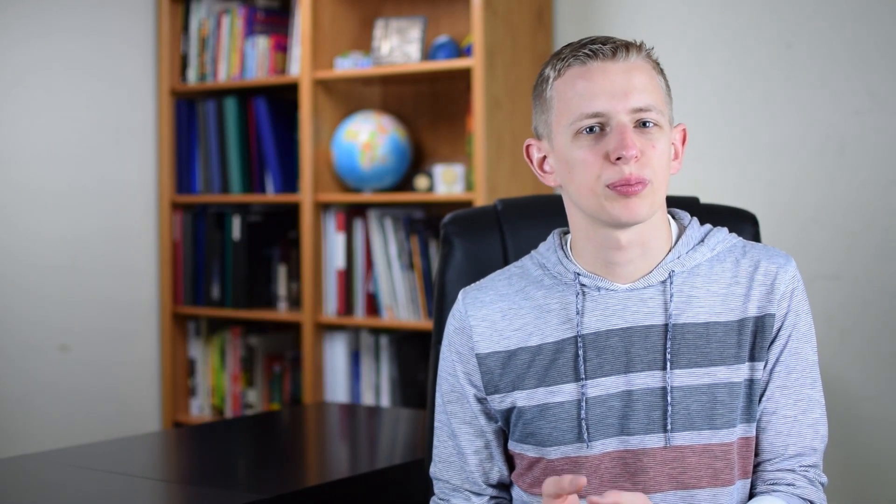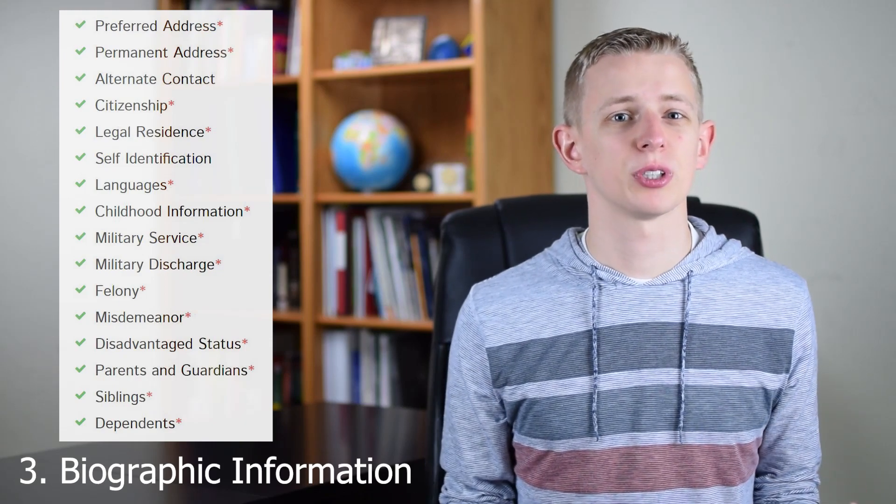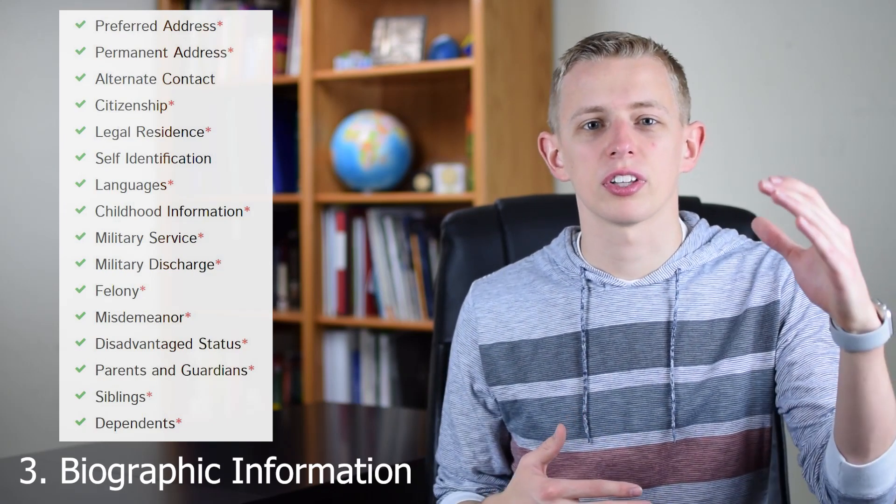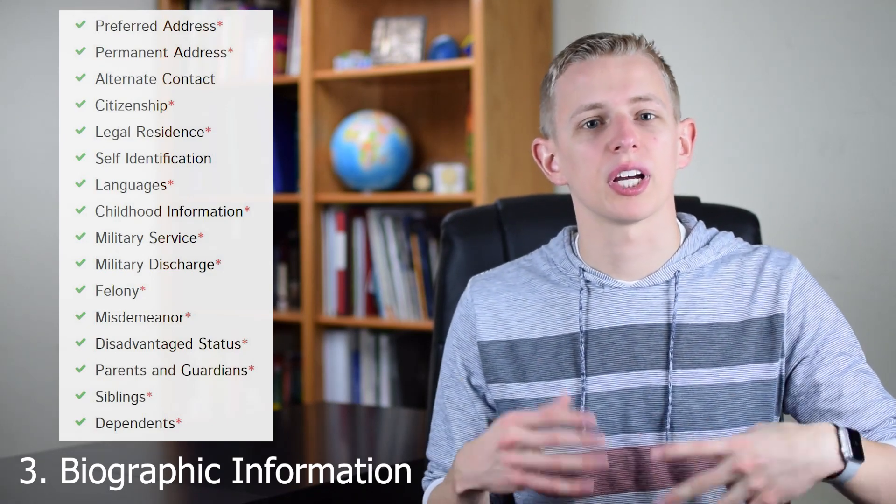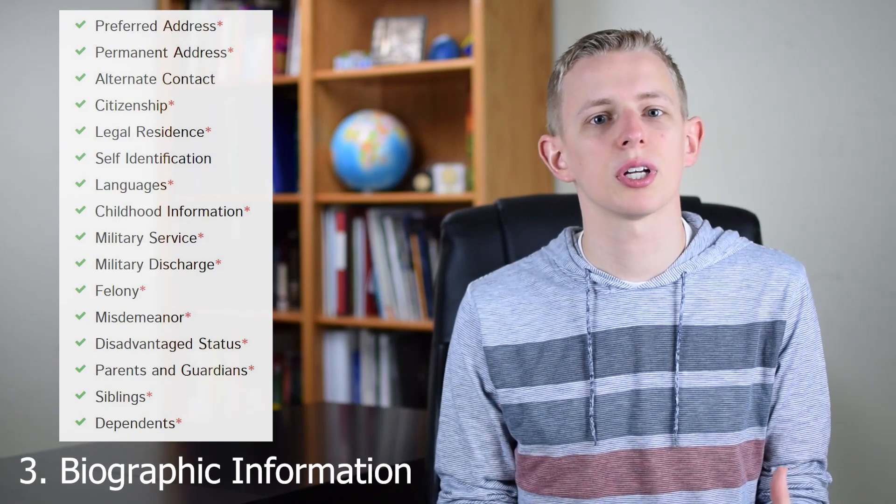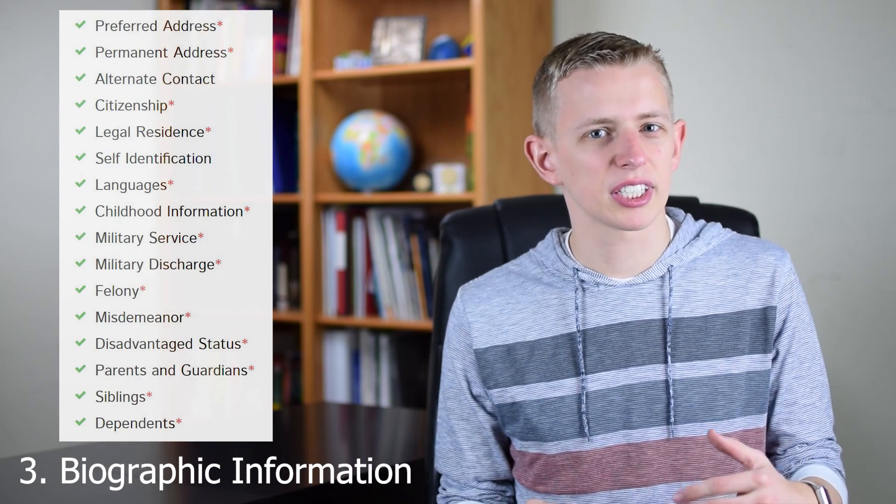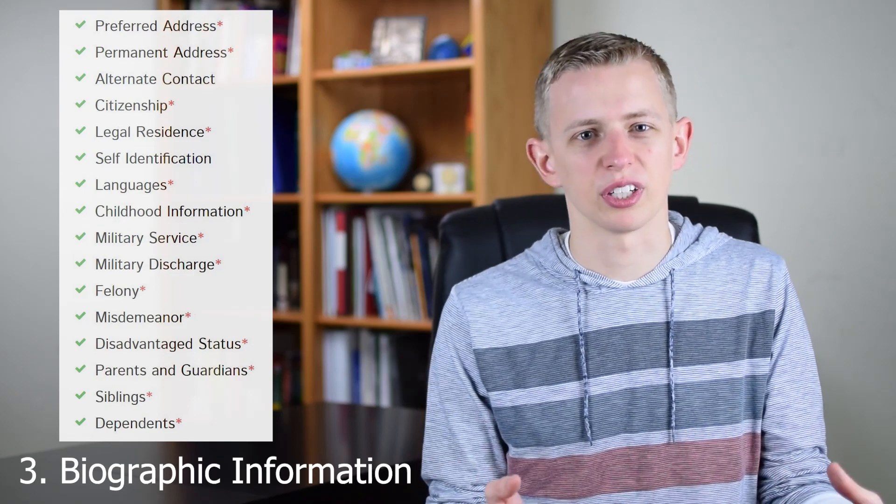The next section is called biographic information, and it's kind of similar to identifying information, but they have a ton more information they require of you. You have to list your address and all of the contact information for you and your parents, your parents' income level, and how you paid for college. It might take some time to fill this out, but really there's not much you can do to do this section better than someone else.